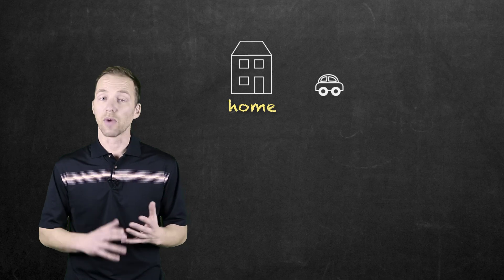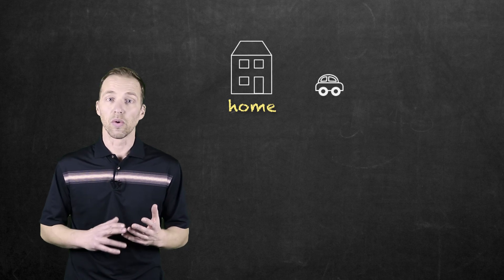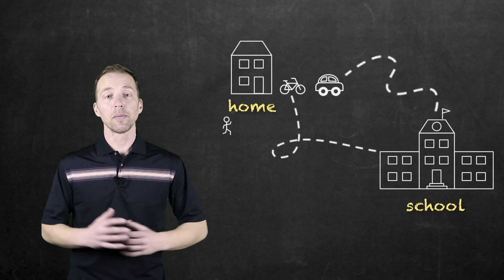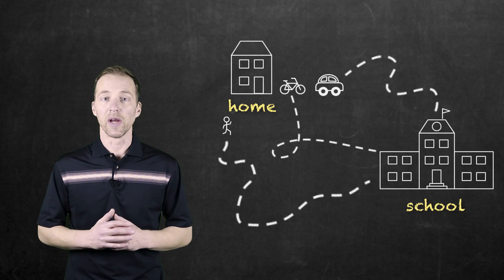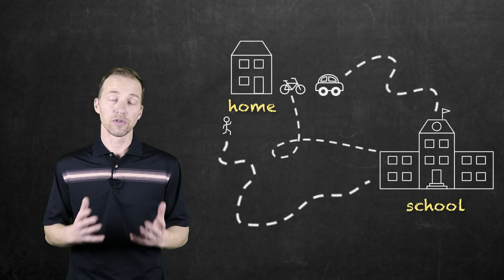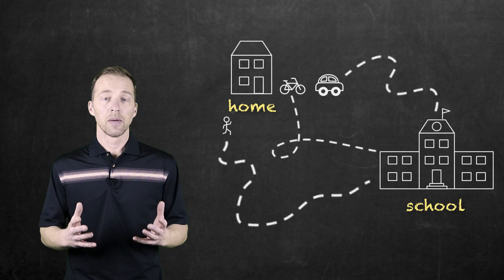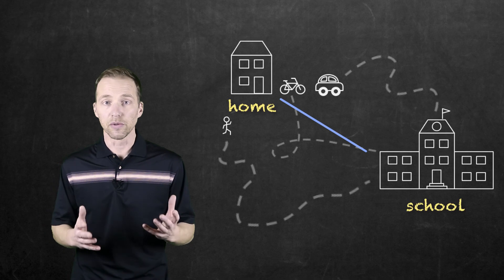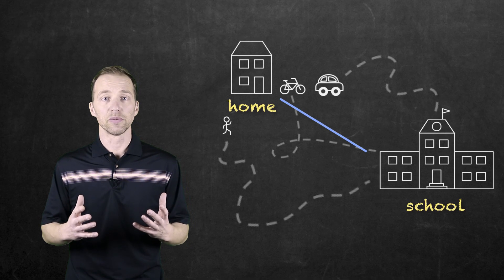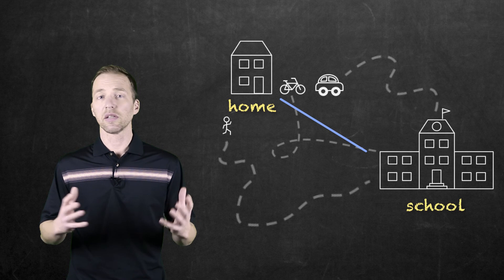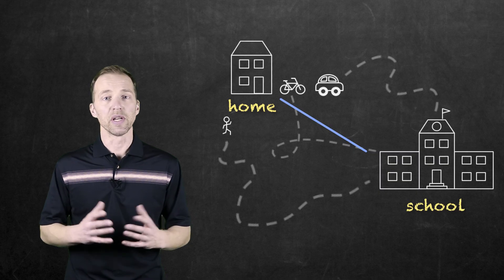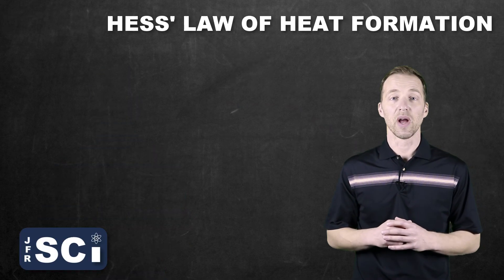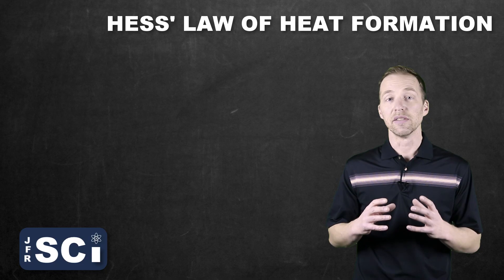Whether you get a ride to school, bike, or walk, there are probably several different ways to get from your house to school. But if we were to take a straight line from your house to the school, your overall displacement — regardless of which pathway you took — is going to be the same. Chemical reactions can work much the same way.